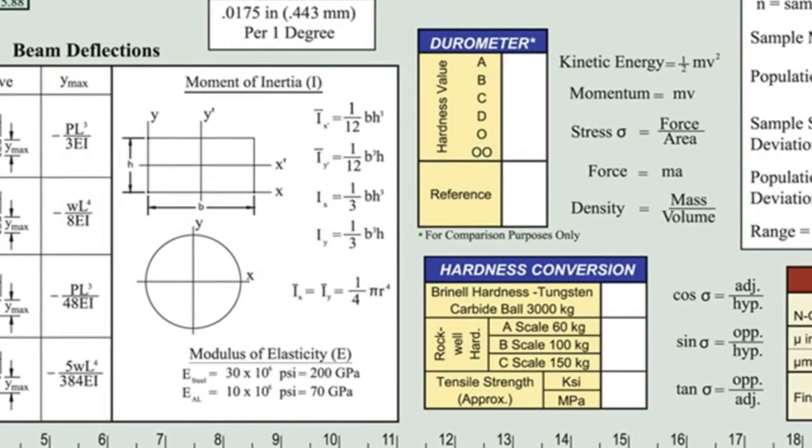To the right, a table of relative comparisons of hardness values across the durometer scales. Below that, a hardness conversion table that allows you to quickly cross-reference Brunel hardness to the Rockwell A, B, and C scales to tensile strength.